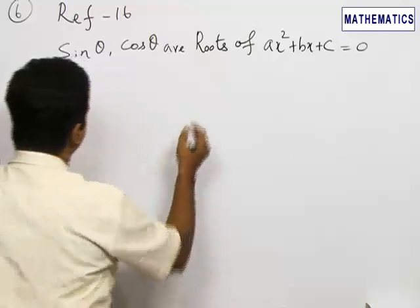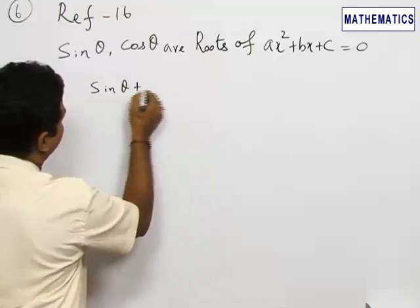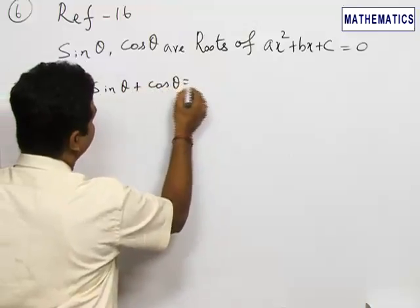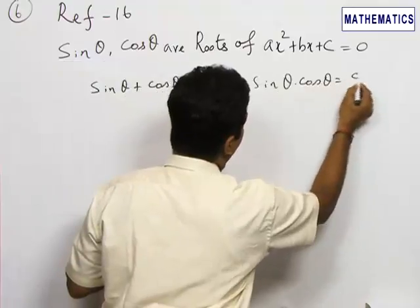So, the sum of the roots, sin θ + cos θ, is equal to -b/a, and the product of the roots, sin θ · cos θ, is equal to c/a.